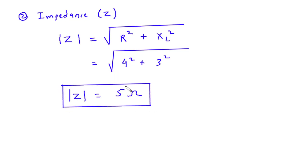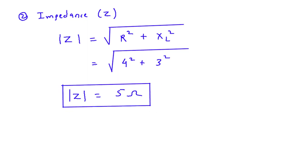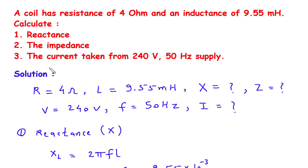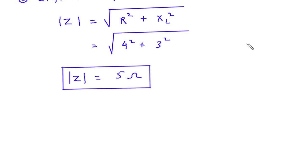Then next we have to find current taken from 240V 50Hz supply. So next is current. Current I is equal to V upon magnitude of Z.